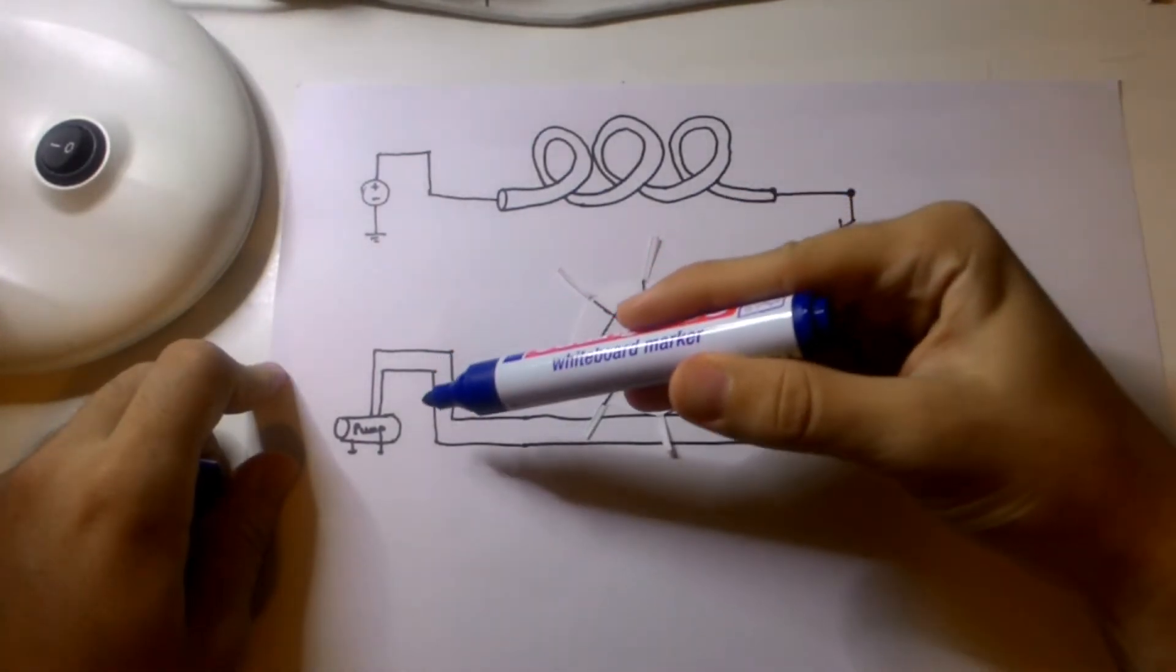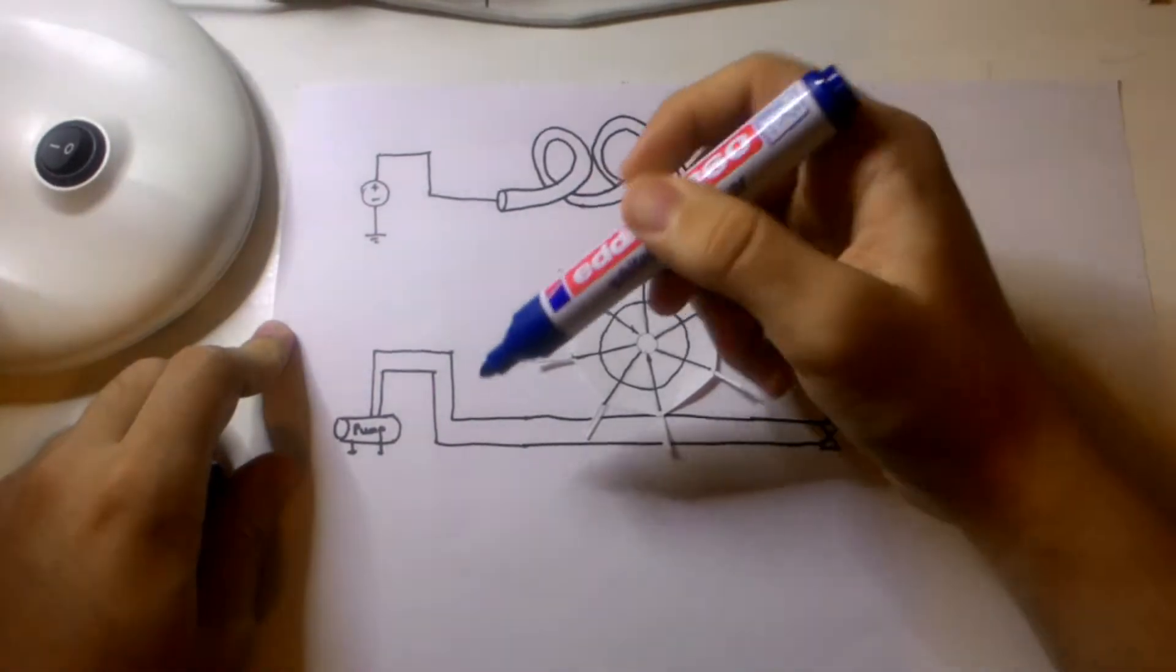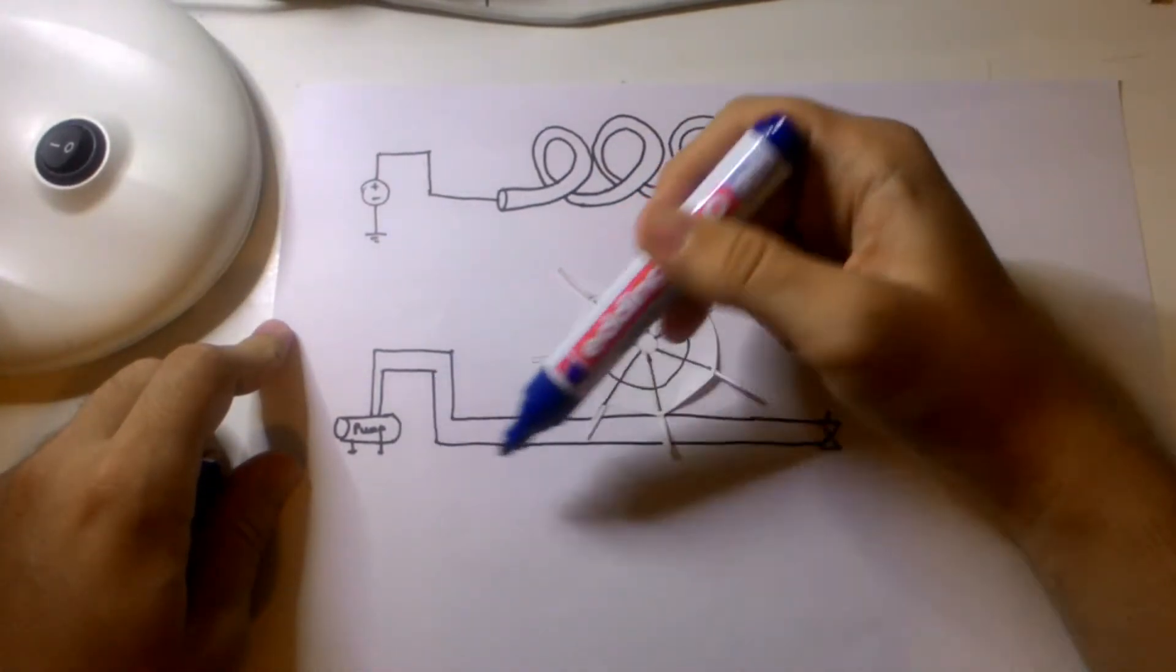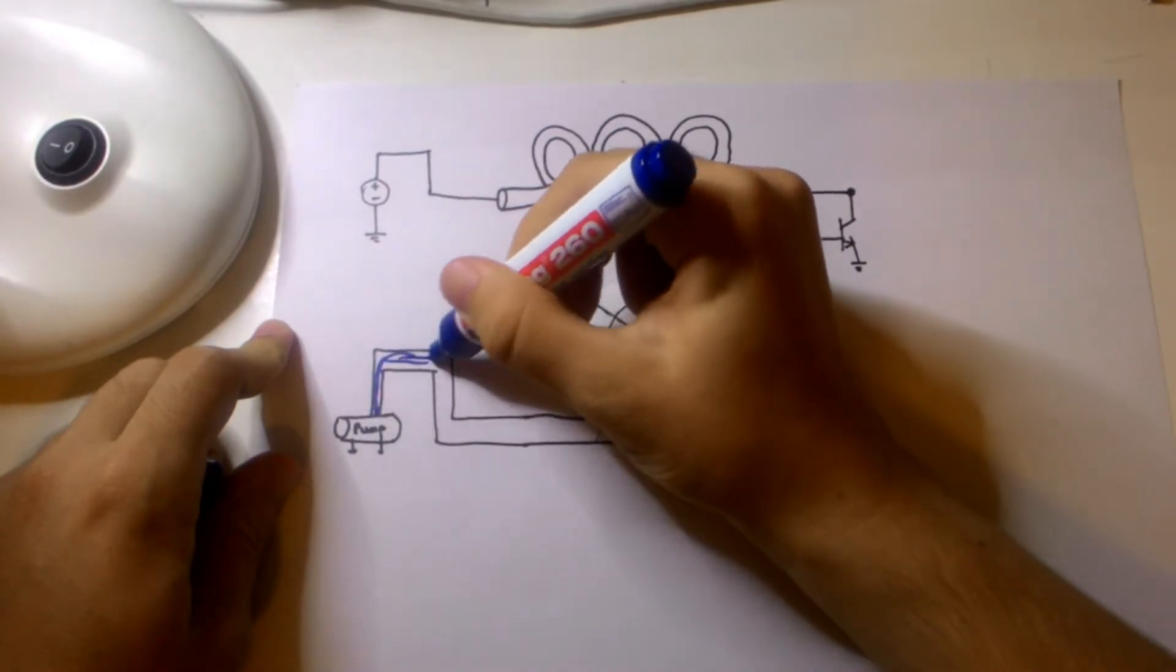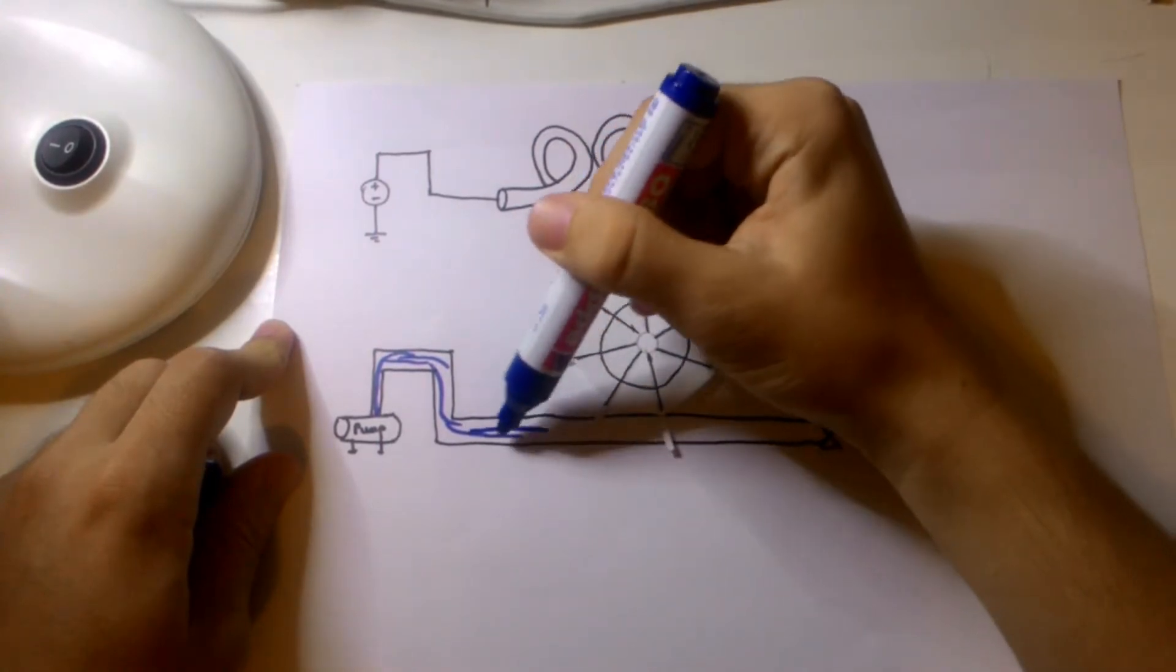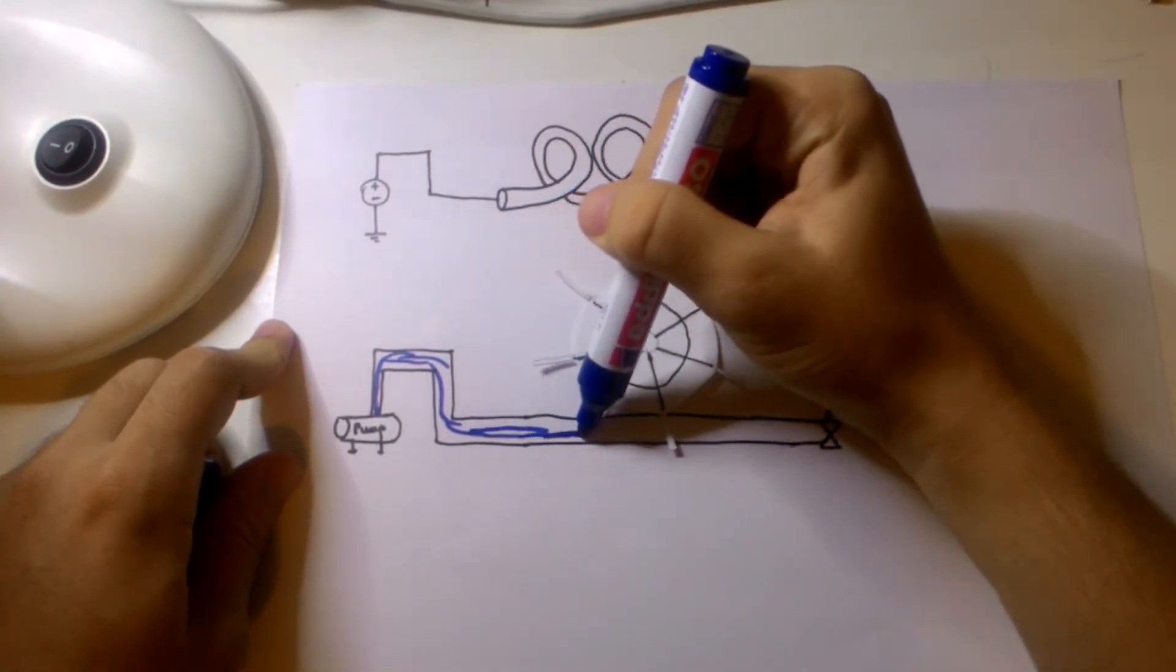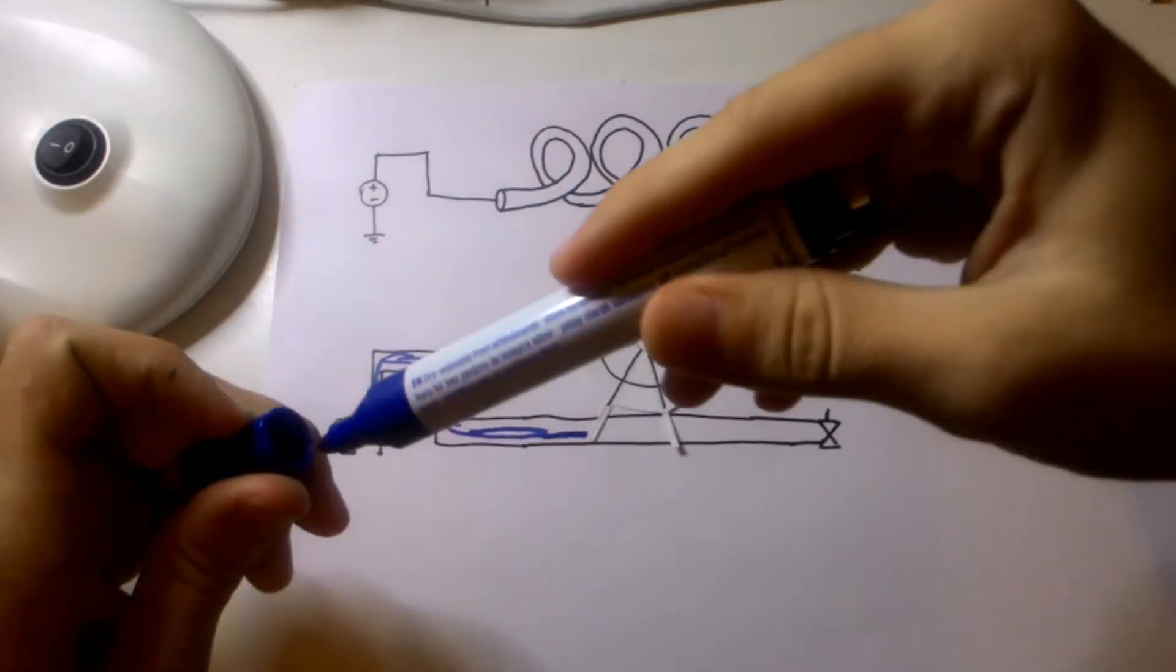First I will start from my hydraulic circuit. So I start my pump and the water will start to flow in this direction. And what's gonna happen when it reaches the water wheel?